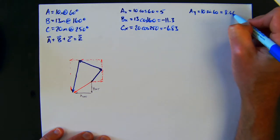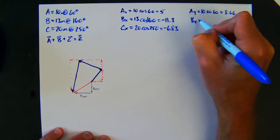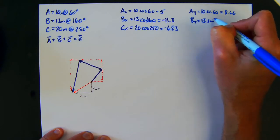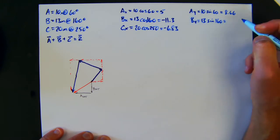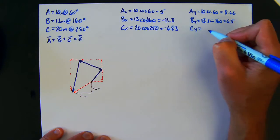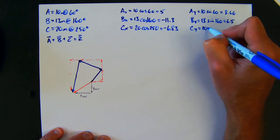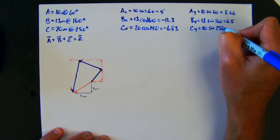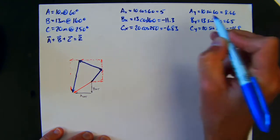By is going to be 13 sine of 160, which is going to be 4.45. And then Cy will be 20 times the sine of 250, which gives me negative 18.8.